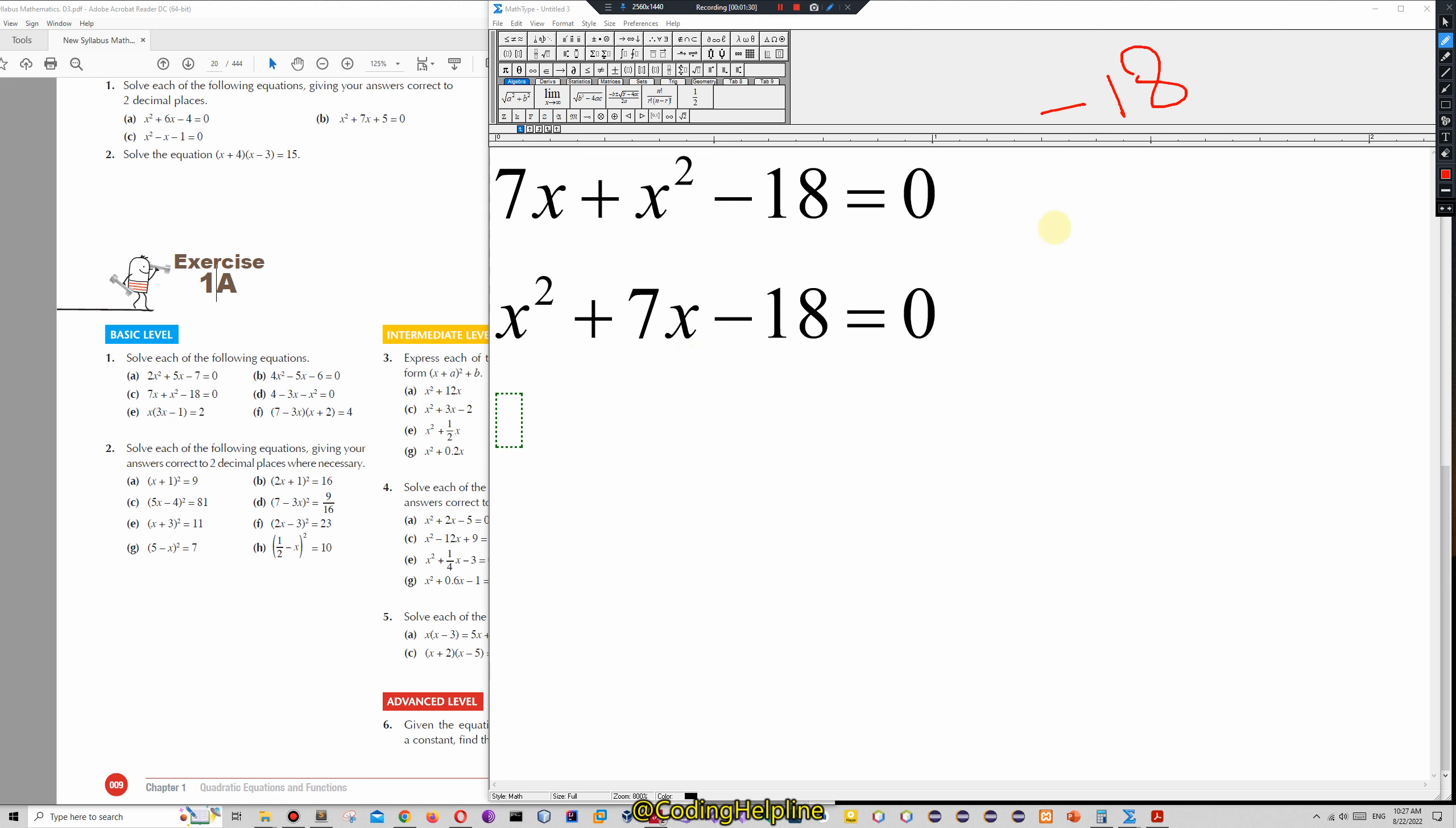We get 9 multiplied by minus 2 equals minus 18, and when we add them up, we will get 7. This will help us factorize the equation.